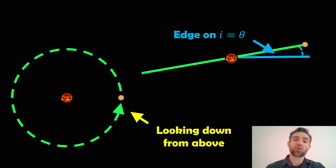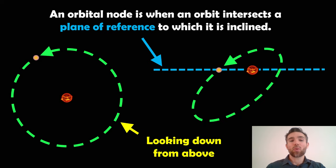So it will be going through that orbital or that reference plane. Now what are the orbital nodes? So if we've got an inclined orbit we've got our plane of reference which is the blue dashed line here, and then each orbit the body is going to go through that plane of reference twice.